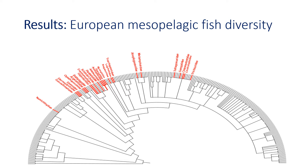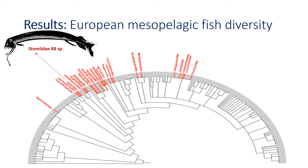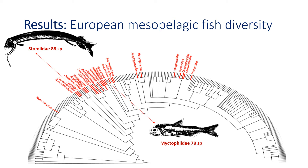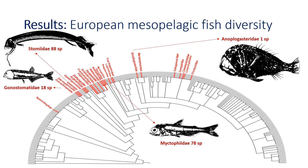Within the families, species diversity is very heterogeneous. We have the most species-rich families: Stomiidae with 88 species and Myctophidae with 78 species. We also have families such as Gonostomatidae with middle ranges of species — 18 in this case — and some families with only one species, such as Anoploasteridae.